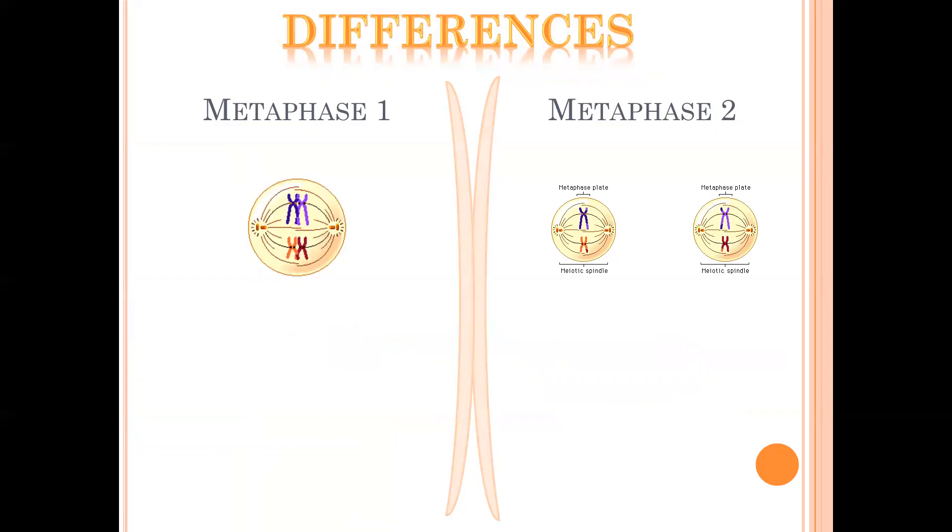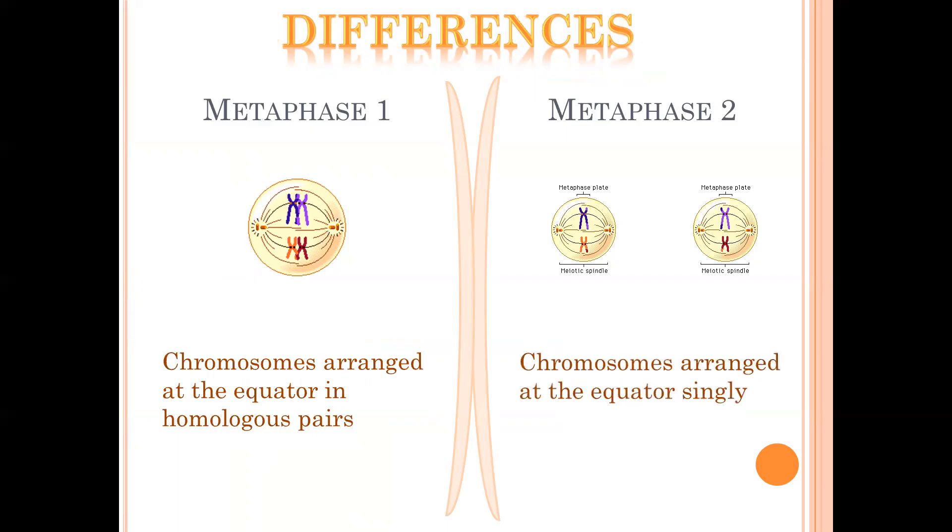The differences between these two phases: both have the chromosomes at the equator, but in metaphase I they'll be in homologous pairs, whereas in metaphase II we find that they are arranged singly. We also notice that in metaphase I you have the diploid number of chromosomes, whereas metaphase II has the haploid number of chromosomes.